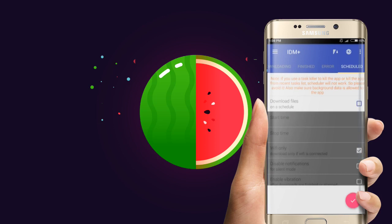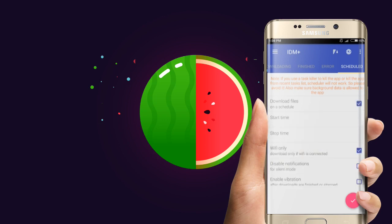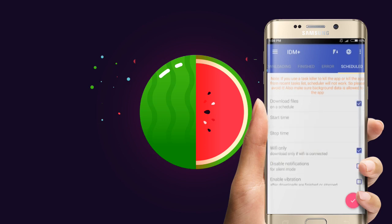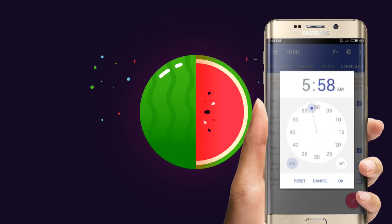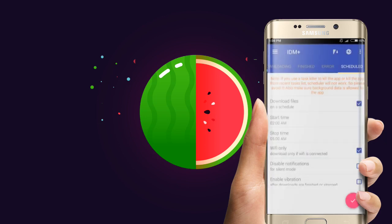If you want to use night 225 free internet, you can use unlimited editing. If you want to use a download schedule, if you want to use a start time, you can use a stop time for 5 minutes.